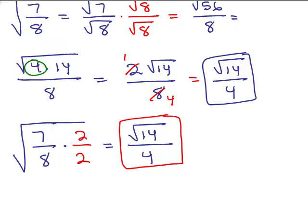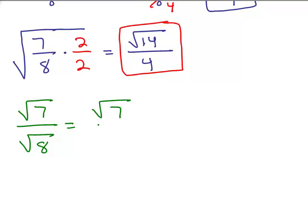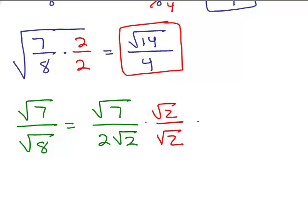You could also write square root of 7 over square root of 8, but simplify the denominator first instead of multiplying by square root of 8. If you simplify square root of 8 — remember 8 is 4 times 2 — from the square root of 4, a 2 gets out. Then you could just multiply the numerator and denominator by square root of 2. Square root of 7 times square root of 2 is square root of 14. And in the bottom, square root of 2 times square root of 2 is 2, so I end up with 2 times 2, which is just 4. So, three ways to do the same problem.